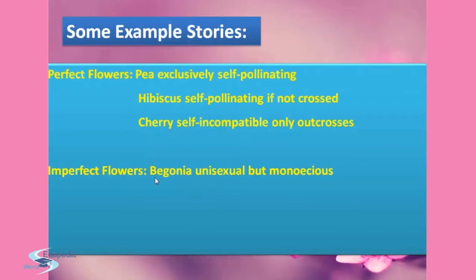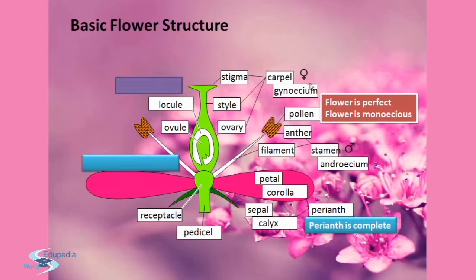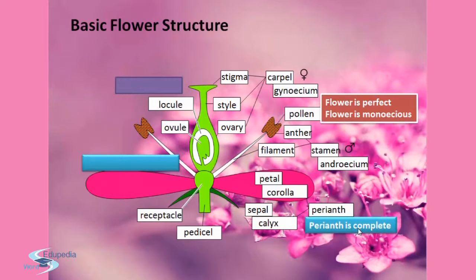Imperfect flowers include Begonia, which is unisexual but monoecious, and Holly, which is unisexual and dioecious — meaning only one reproductive unit is present in one flower. Cucumber can be variable: male or perfect female, or parthenocarpic. Calyx and corolla are accessory organs, while androecium and gynoecium are the reproductive organs. In some flowers like lily, calyx and corolla are not distinct and are termed as perianth. When a flower has both androecium and gynoecium it is bisexual, whereas a flower having either only stamen or only carpel is unisexual.